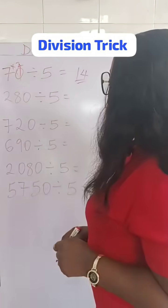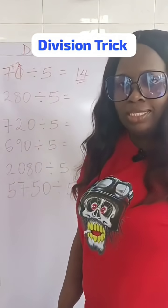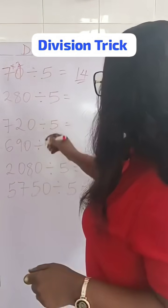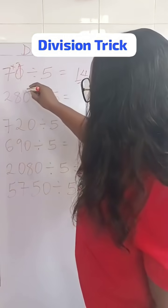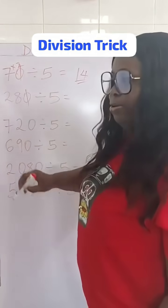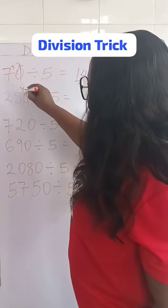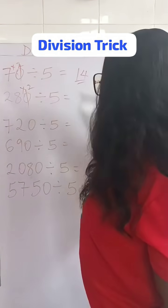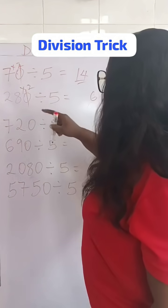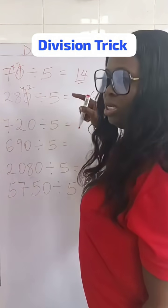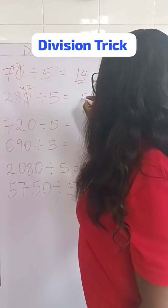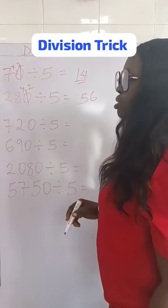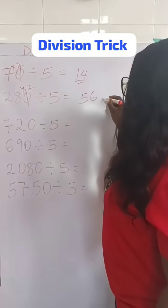Number 2: we have 280 divided by 5. What do we do? We just cancel the 0 and multiply 28 by 2. 2 times 8 is 16, and 2 times 2 is 4, plus 1 is 5. Therefore, our answer is 56.